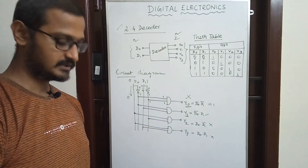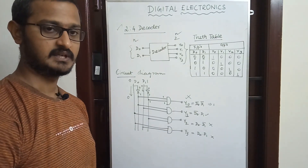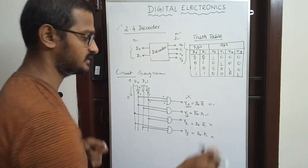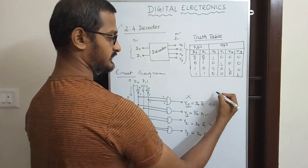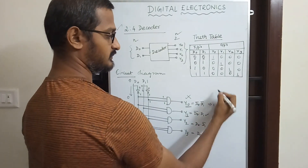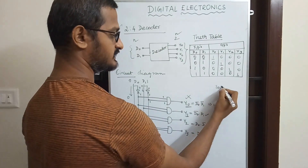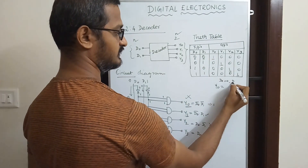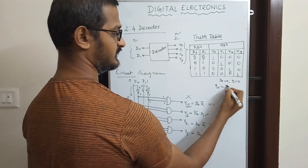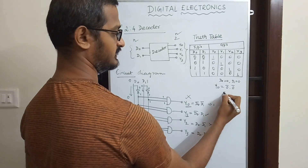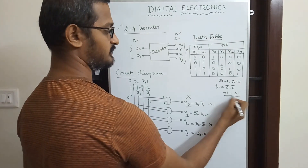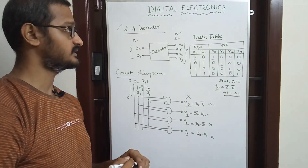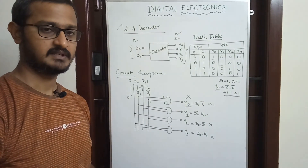Now let's look at the circuit diagram equations. The equations use D0 bar and D1 bar — the complemented inputs. For example, Y0 equals D0 bar AND D1 bar. When D0 equals 0 and D1 equals 0, then 0 bar into 0 bar equals 1 into 1, which equals 1. That is how Y0 is derived. This is a very simple concept — if you practice it, it will be easy.